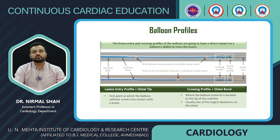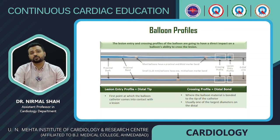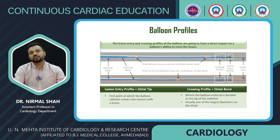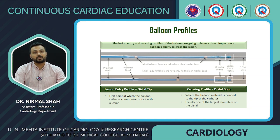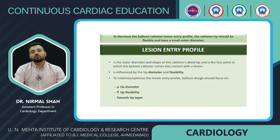The distal-most end is the lesion entry profile — the first point at which the balloon catheter comes into contact with the lesion. The crossing profile is the distal bond, where the balloon material is bonded to the tip of the catheter and is usually the largest diameter on the distal section. From right to left: lesion entry profile, crossing profile (distal bond), distal radiopaque marker band, proximal marker band, proximal bond, and proximal shaft.